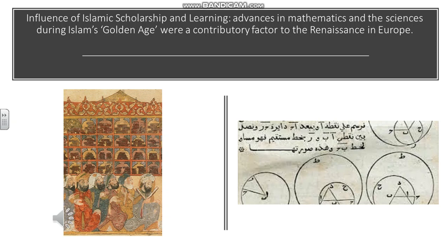Hindu scholars came up with the number system between the first and the fourth century, and then it was developed further by Arabic scholars in the eighth and ninth centuries. It formed the basis for mathematics, which enabled so many more developments in architecture, but also in art as well, and the understanding of perspective.